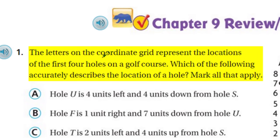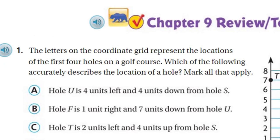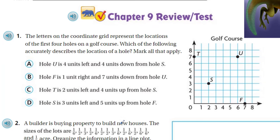The problem says the letters on the coordinate grid represent the locations of the first four holes on a golf course. Which of the following accurately describes the location of a hole? Notice the word 'accurately' — that means it's got to be correct. This is a 'mark all that apply' problem, so be careful: there may be more than one answer.